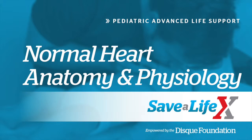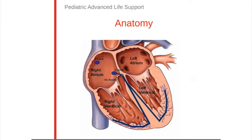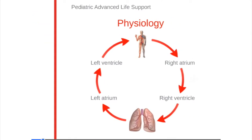Here we have the human heart, and it's divided into four chambers: the two upper atria and the two lower ventricles. The right atrium receives blood from the body and sends it to the right ventricle to be sent to the lungs for oxygenation. The left atrium receives the newly oxygenated blood and sends it to the left ventricle to be sent throughout the rest of the body. The valves between the chambers are meant to prevent reverse blood flow.